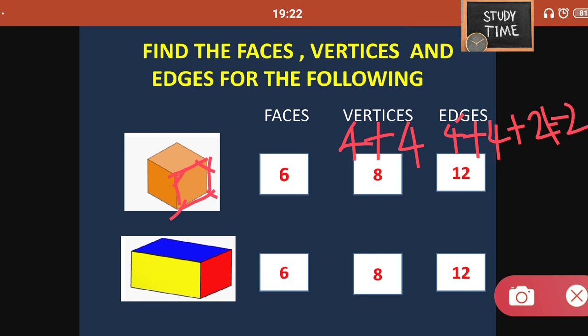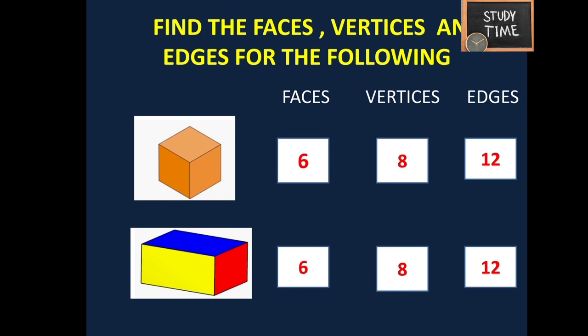Totally a cube has 12 edges. In the same way, you have to find the faces, vertices, and edges for a cuboid. Both are the same — you will get the same number of faces, 6, in both cube and cuboid. Similarly, 8 vertices and 12 edges for both cube and cuboid.